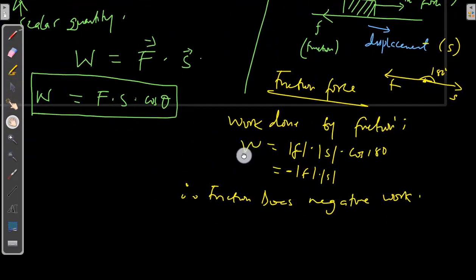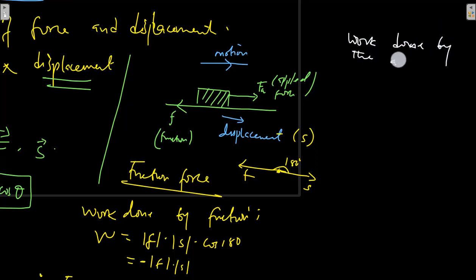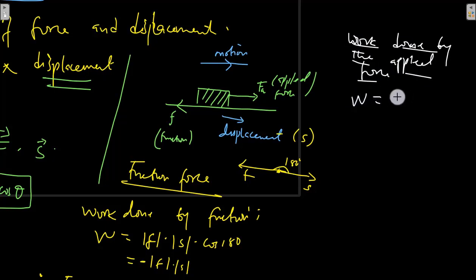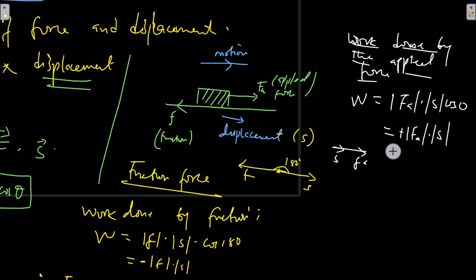Let's examine the kind of work that our applied force does. The work done by the applied force is equal to the magnitude of the applied force times the magnitude of displacement. The angle between the applied force and the displacement is 0°, so that will be cos 0°, and we know that cos 0° is 1. So the work is positive — we conclude that the applied force does positive work.